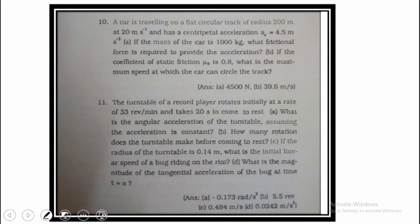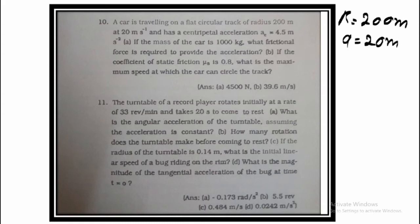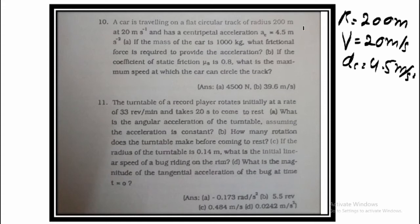A car is traveling on a flat circular track. The radius is equal to 200 meters, velocity is equal to 20 meters per second, and centripetal acceleration is equal to 4.5 meters per second squared. If you don't understand the given data, look at the units — meters means length, meters per second is velocity, and meters per second squared is acceleration.